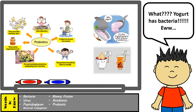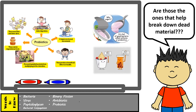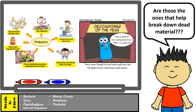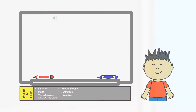Bacteria doesn't just live inside of us — it may also live in soil. That's why these bacteria are referred to as decomposers, which we know from our previous lecture play a huge role in food chains and nutrients getting recycled. For instance, some bacteria can digest oil, which is why scientists are trying to find ways to use this type of bacteria to help clean oil spills.